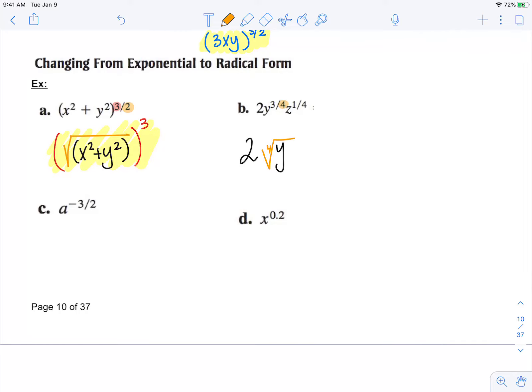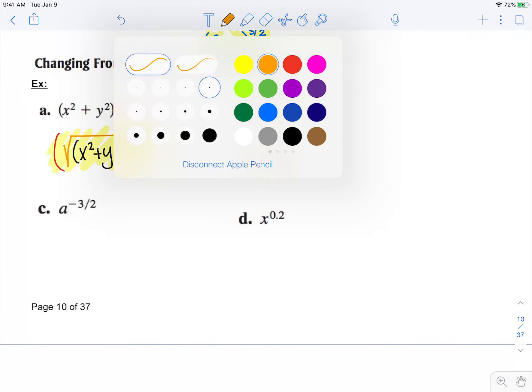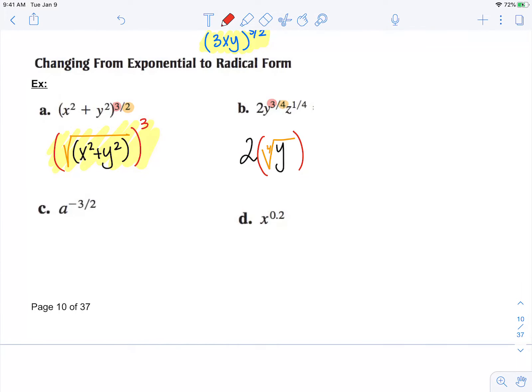The numerator of my exponent is my power, that's going to be cubed. We also have z. Once again, the denominator is the index of the root, and since we're raising it to a numerator of one, that's the first power, we don't really need to write anything there.